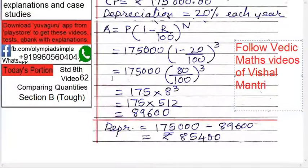...minus amount. Why? Because here it is minus. There in compound interest it was plus. That's why we used to do A minus P. Now A is less than P, that's why we are doing P minus A.